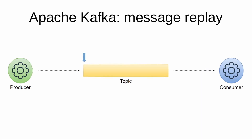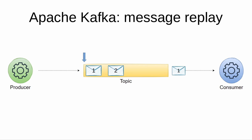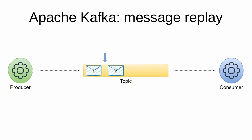Kafka does not remove messages as soon as they are read. For each consumer, Kafka keeps track of the consumer's position in a topic. This allows a consumer to deliberately rewind back to an old offset and reread and reprocess messages. The consumer can reset its position in the topic and retrieve previously retrieved messages again.